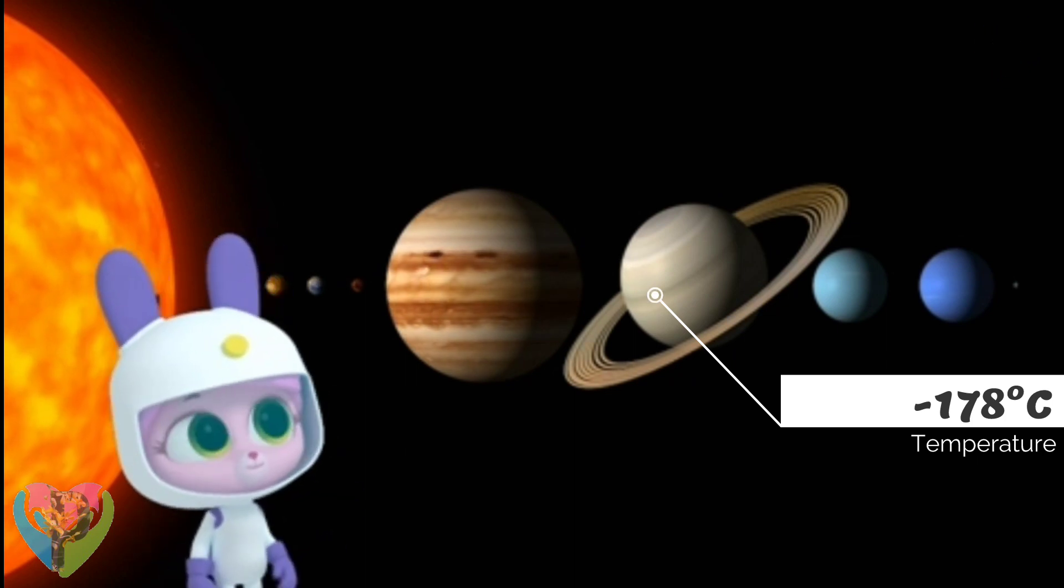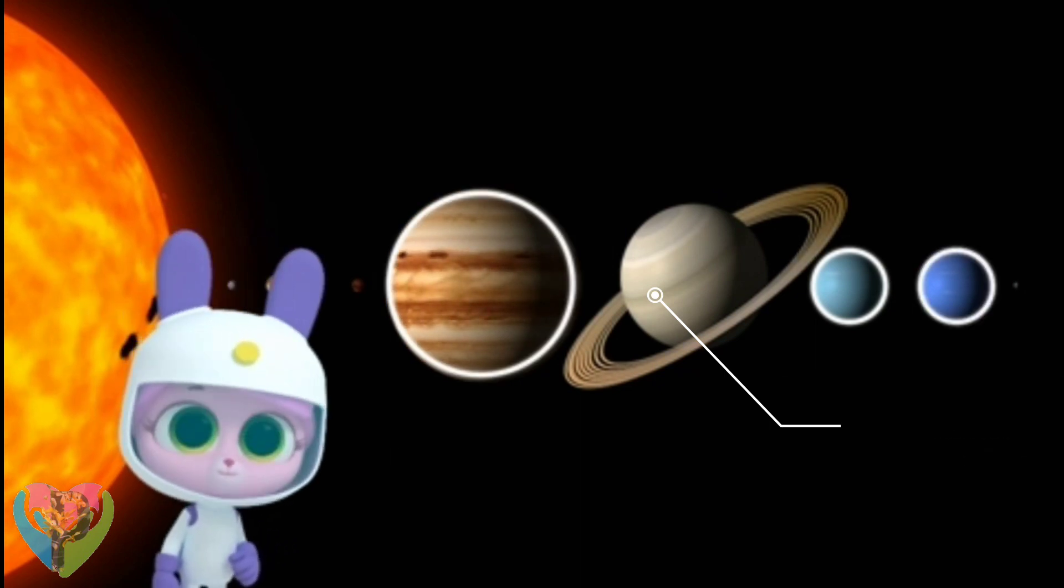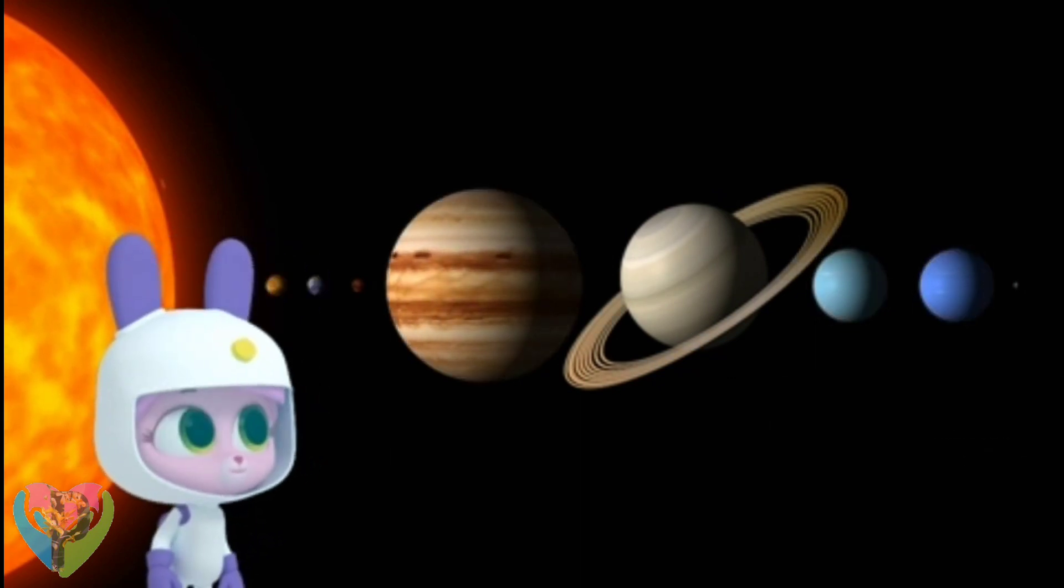Yep! Three of the other planets in our solar system, Uranus, Jupiter, and Neptune, also have rings. But not as bright and big as Saturn's.